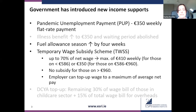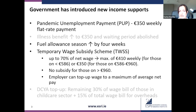Fuel allowance was also extended by four weeks as a result of the crisis. The rationale was that the government was asking people to stay home, so in particular for older people to do this comfortably, it was decided to increase fuel allowance for four weeks. The temporary wage subsidy scheme was then introduced, and the aim of this scheme is to maintain links between employers and employees, so that when economic activity picks up again and public health measures are lifted, it will be easier for companies to resume activity.